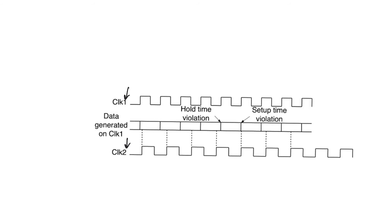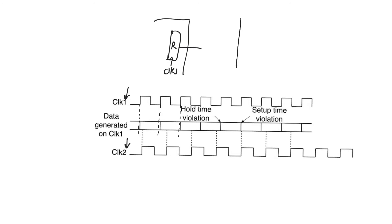Let's assume the transmitter is producing data at clock one and the receiver is sampling it at clock two. Data is generated on the edges of clock one — more precisely, tcq after the edge. The transmitter produces data out of a final output register synchronized to clock one. The receiver samples the data at a register operating at clock two. If the two registers used the same clock, this would be a simple shift register and would work without a hitch.